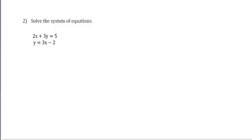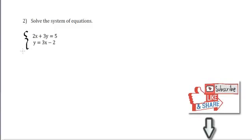Solve the system of equations 2x plus 3y equals 5 and y equals 3x minus 2. This is a system of two equations and two unknowns.